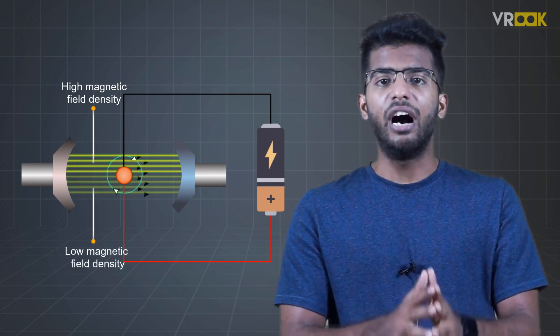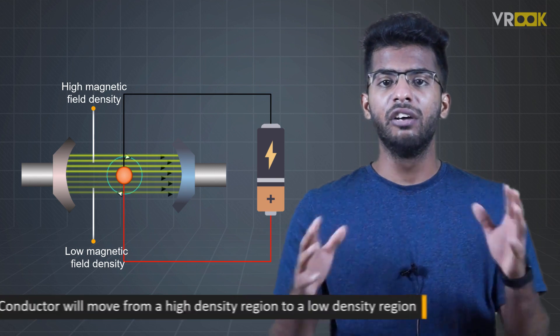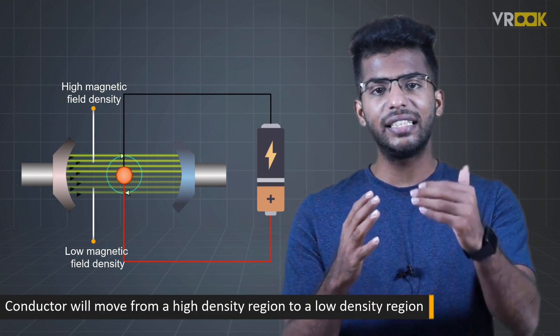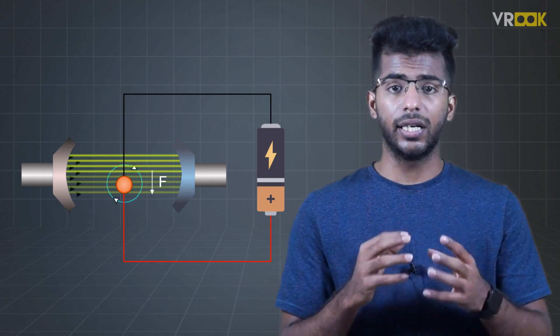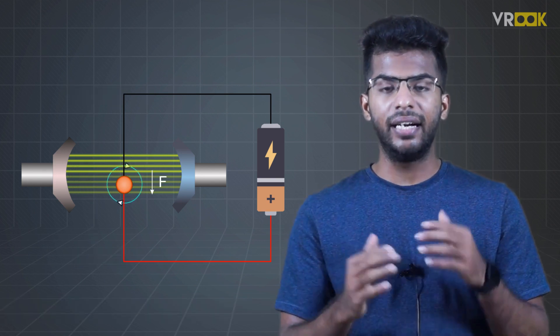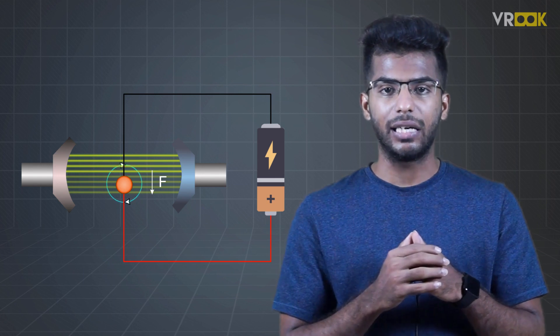We have a high magnetic field density region and a low magnetic field density region. Because of this, a force will act on the conductor which will move it from a high density region to a low density region. So, the current carrying conductor kept in a magnetic field experiences a mechanical force.